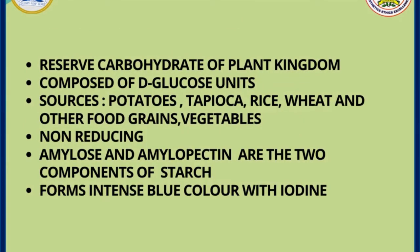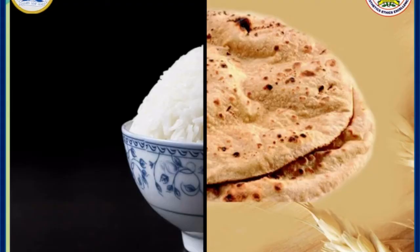Starch is a reserved carbohydrate of the plant kingdom, which is a homopolysaccharide made of D-glucose units. It is present in potatoes, tapioca, and many grains, and it is a non-reducing carbohydrate. The two components of starch are amylose and amylopectin. In our daily life, we take starch in the form of rice and wheat.